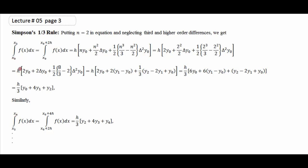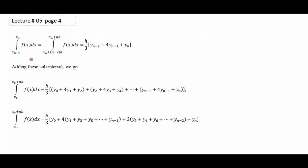اگلے دو intervals کے لئے x₂ سے x₄ تک: starting y₂ سے start ہوگا، x₄ پر y₄ پر end ہوگا — بالکل same category سے h/3·(y₂ + 4y₃ + y₄) لکھ لیا۔ اسی طرح nth والا لکھا، ان سب کو add up کیا۔ جن کا coefficient 4 ہے، جن کا coefficient 2 ہے، جن کا single coefficient ہے، الگ الگ لکھ لیا۔ یہ آپ کے پاس Simpson 1/3 rule formula بن گیا۔ اور Simpson 1/3 کے لئے number of sub-intervals even ہونے چاہیں۔